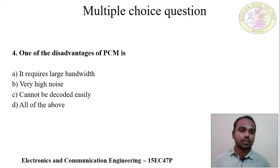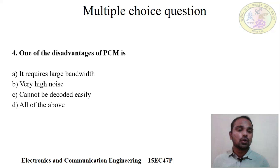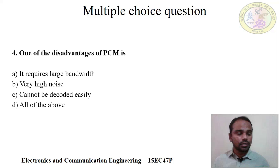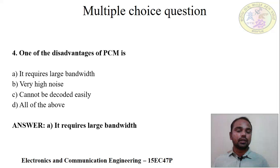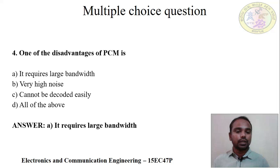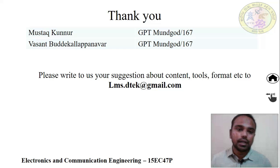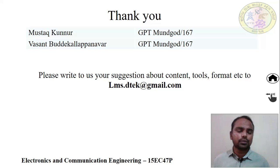Question 4: What is one disadvantage of PCM? Options are: A) It requires large bandwidth, B) Very high noise, C) Cannot be decoded easily, D) All of the above. The correct answer is A — it requires large bandwidth. Because the analog signal is converted into digital, it requires double the bandwidth, hence PCM requires large bandwidth compared to analog signal transmission. If you have any suggestions or queries related to content, tools, and format, please write to lms.dteck@gmail.com. Thank you, students.